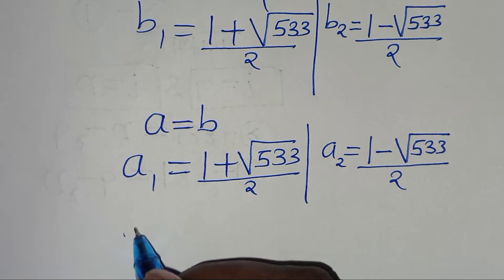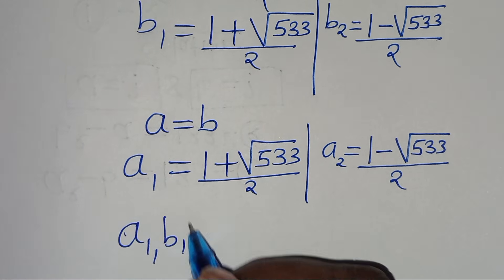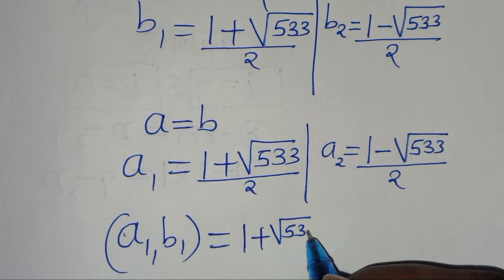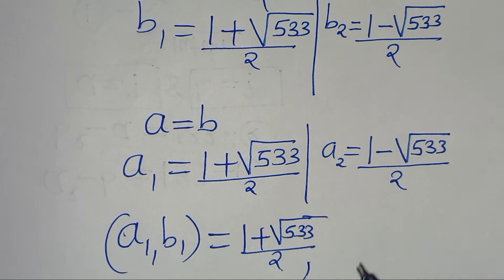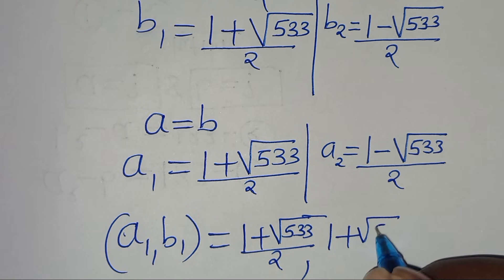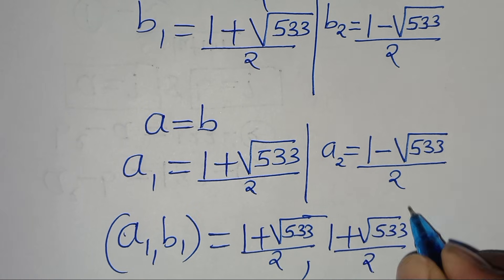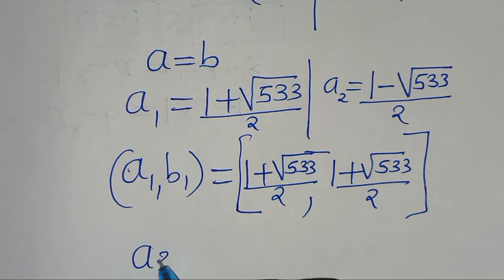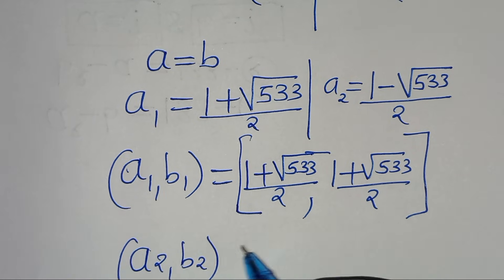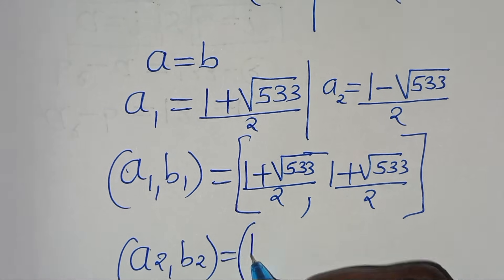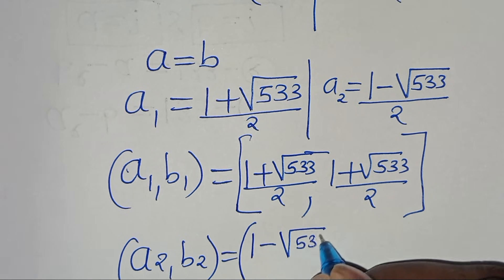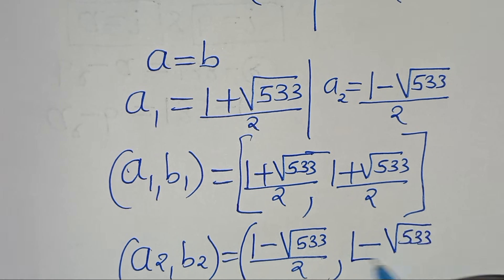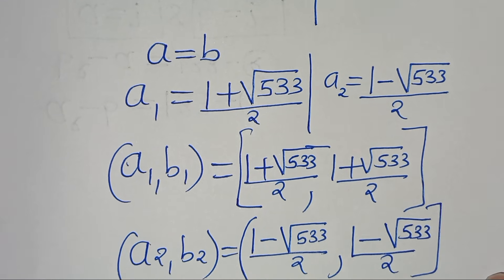So the first solution set is: a1 comma b1 equals open parenthesis 1 plus square root of 5/3 over 2, comma, 1 plus square root of 5/3 over 2, close parenthesis. The second solution set is: a2 comma b2 equals 1 minus square root of 5/3 over 2, comma, 1 minus square root of 5/3 over 2.